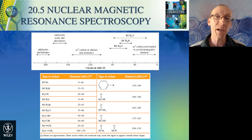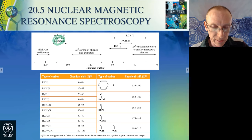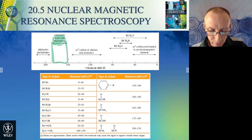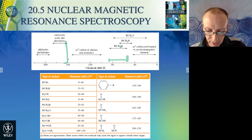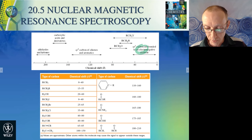From carbon-13 NMR chemical shifts, we can get useful structural information. Aldehydes and ketones give carbons around 180–220 ppm. Carboxylic acids, esters, and amides give peaks around 160–180 ppm. Alkenes and aromatics (sp2-hybridized carbons) give peaks between about 100 and 150 ppm. Carbons attached to oxygen come between about 50 and 90 ppm, while carbons attached to nitrogen appear between about 40 and 70 ppm. sp3-hybridized carbons with no electronegative groups attached come between about 0 and 40 ppm.